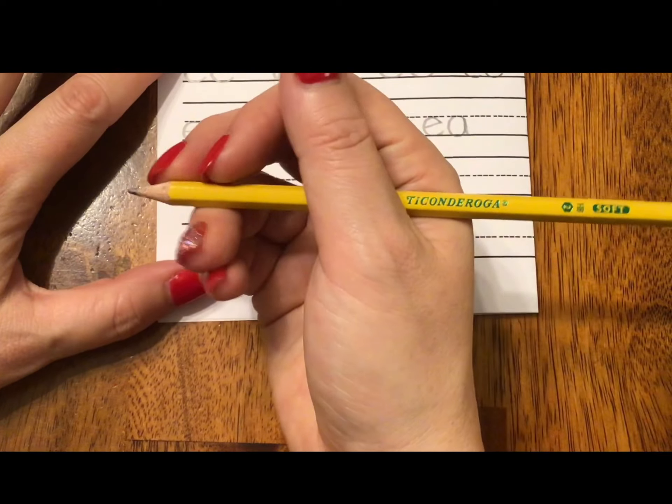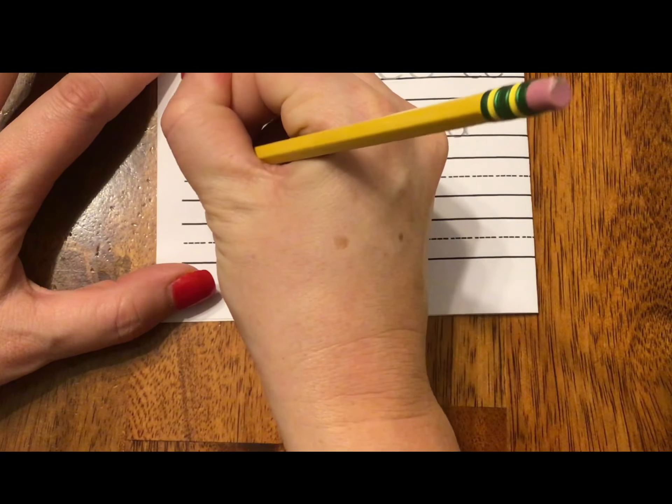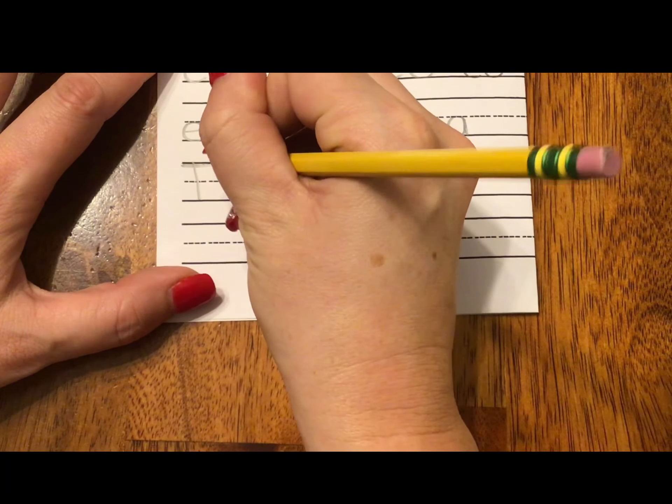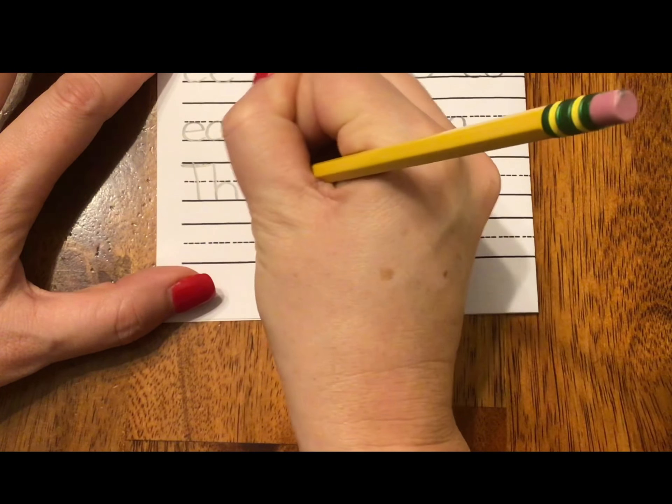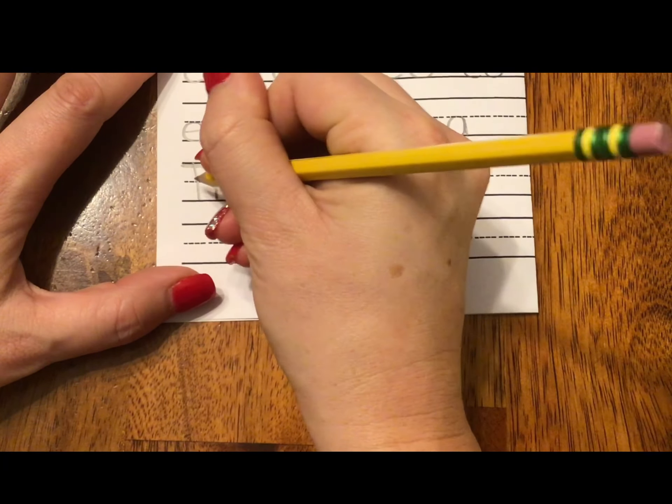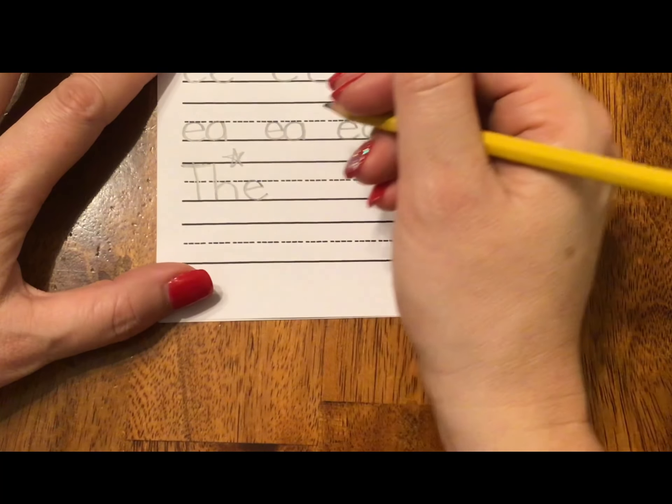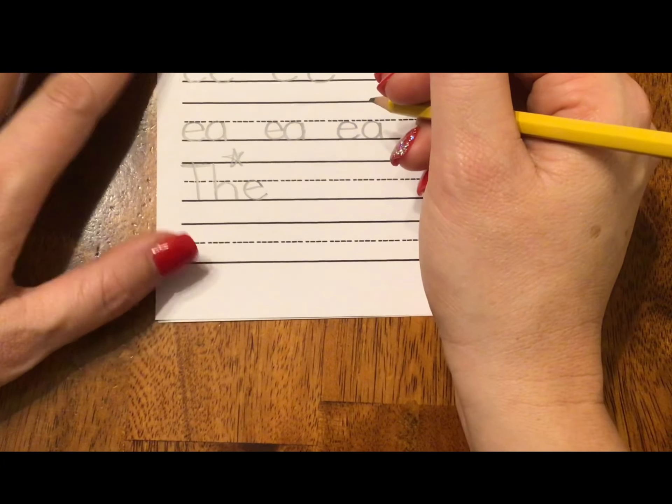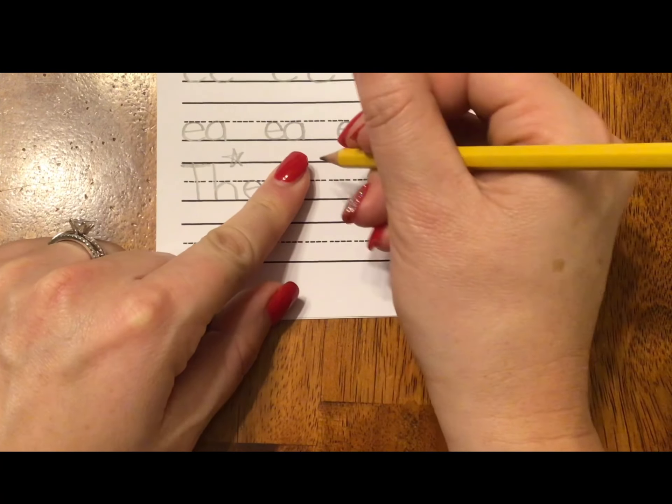The. Making sure that we're starting with a capital T. It's the beginning of a sentence. T-H-E. If you wrote capital T, H-E, give yourself a star or a smiley. If not, please write it now. The. Finger space. Bow. Bow. I said do B.